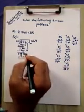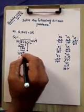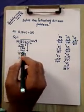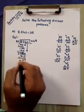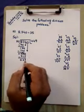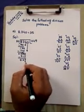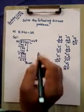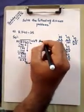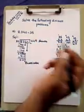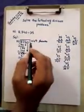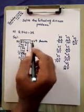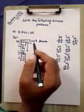Now subtract: 0 from 5 — we can't subtract because 0 is smaller, so we borrow from 1; here is 10 and 3 remaining. From 10 subtract 5 is 5 remaining; from 3 subtract 1 is 2 remaining; from 3 subtract 3 is 0 remaining. So 25 is the remainder. Answer: 8740 divided by 35 equals 249 remainder 25. This is the answer of the deviant problem.